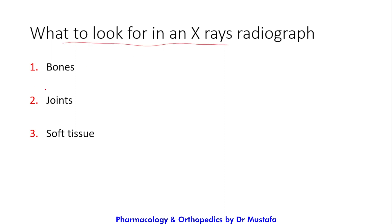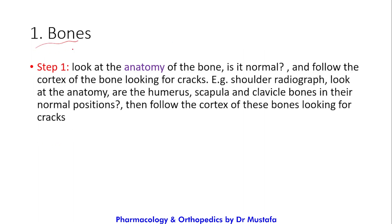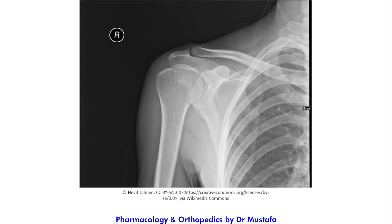When reading an X-ray, you start with the bones, then go to the joints, and finally look at the soft tissue. Step one is to look at the anatomy of the bone and see if it is normal, then follow the cortex of the bone looking for cracks. For example, on a shoulder radiograph you look at whether the humerus, scapula, and clavicle are in their normal positions, then follow the cortex.